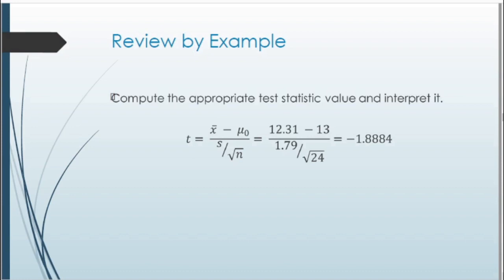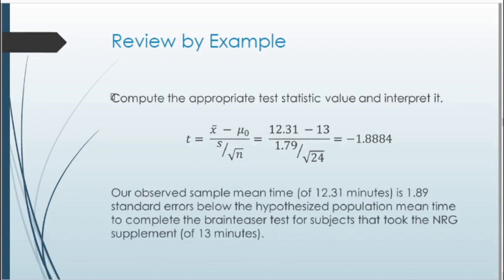We can interpret the test statistic: our observed sample mean time of 12.31 minutes is 1.89 standard errors below the hypothesized population mean time of 13 minutes for subjects that took the energy supplement. Note that we say 'below' because we got a negative t. If it were positive, we'd say 'above.' The key language in interpretations is that our observed sample is this far away from our population.